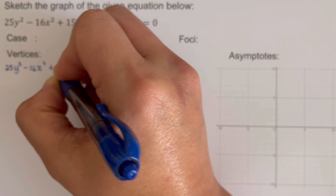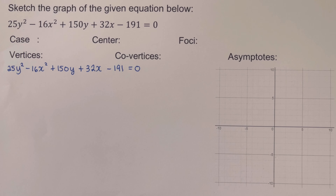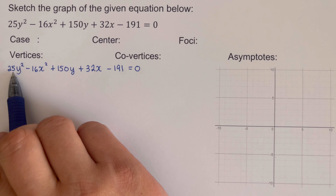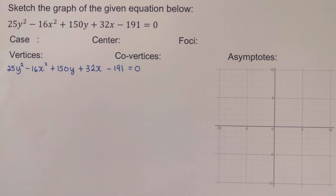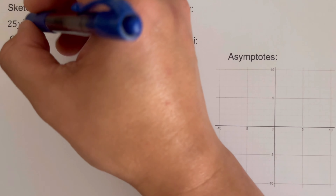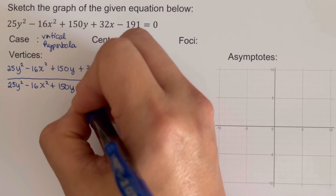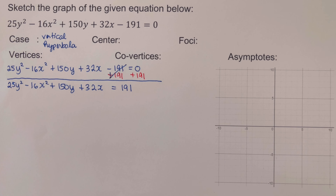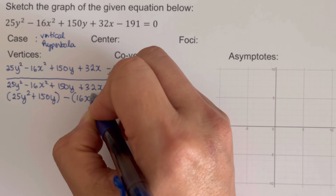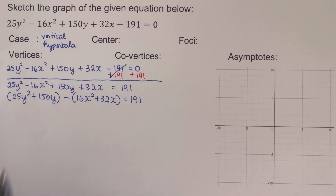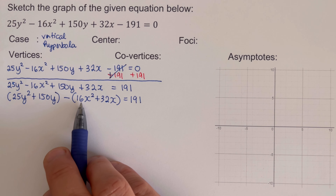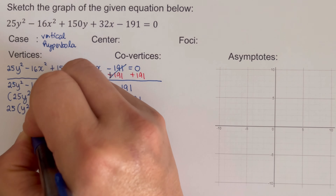Before going over the second example, let's rewrite the equation. Notice that 25y squared is the positive part of the equation, which tells us this is a vertical hyperbola. We add 191 to both sides, then group all the y terms inside one set of parentheses and all the x terms inside another. Next we factor out 25 from the y group and 16 from the x group.